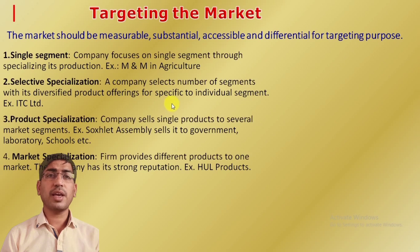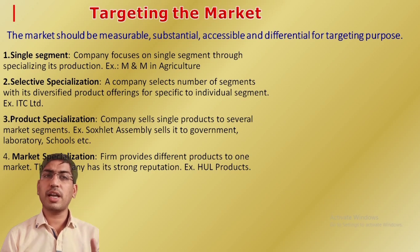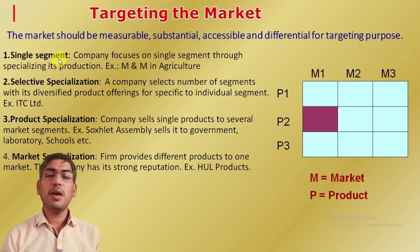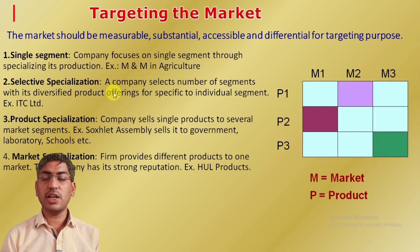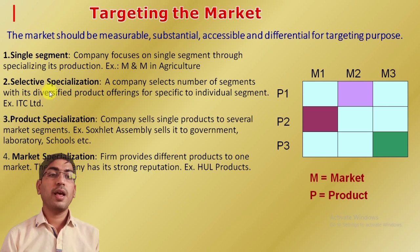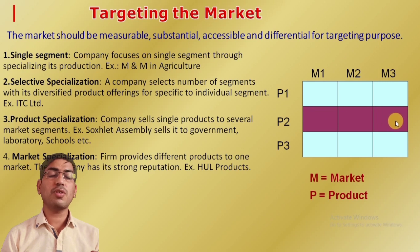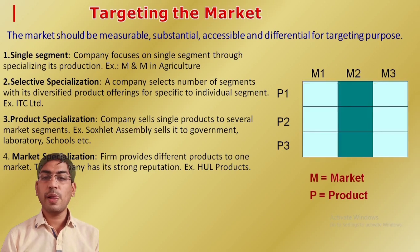Now we talk about targeting the market. Whatever segments are there, we have to target them with the help of the 4Ps marketing mix — product, price, place, promotion — further extended to 7Ps with people, process, and physical environment. For single segment targeting, for example Mahindra & Mahindra targets agriculture. For selective segment targeting, for example ITC is present in tobacco, confectionery, and apparels.